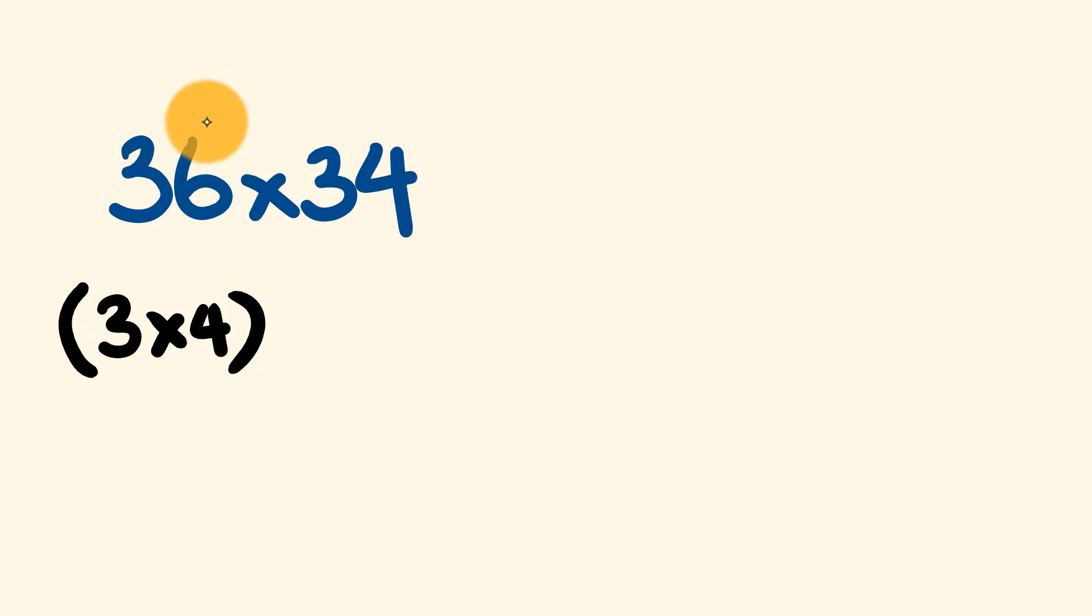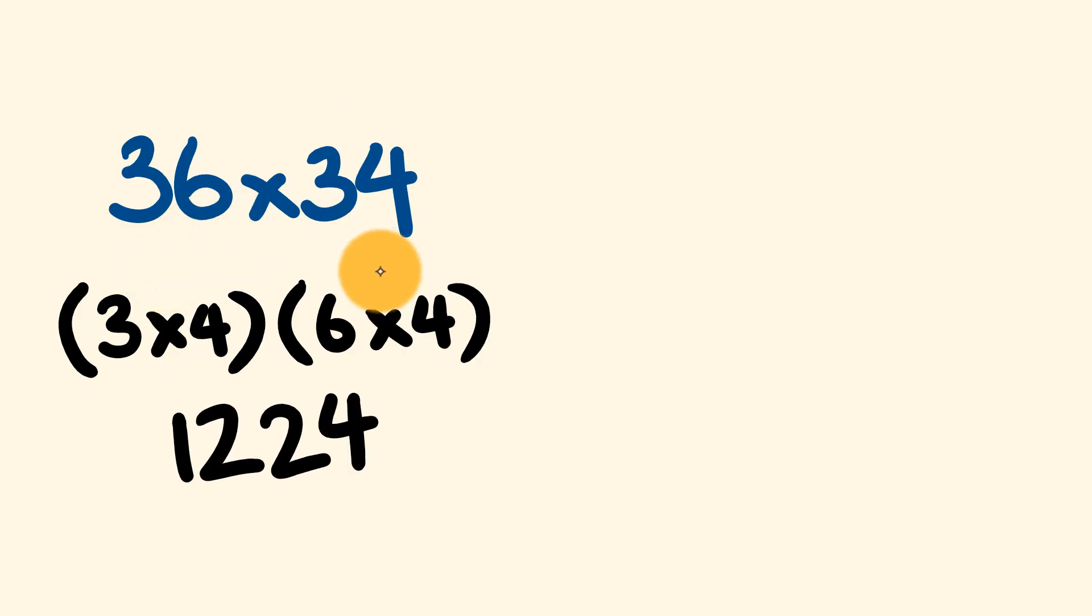So let's have a look, trick number one. Say we wanted to multiply 36 by 34. We look at the tens digit here, which are both in their threes. So what we're going to do to get our tens digit is multiply 3 by 1 more than 3, 3 times 4. And to get our units digit, we multiply the two units digits together. So we have 6 times 4 and this will give us our answer. 3 times 4 equals 12 and 6 times 4 is 24. Our answer is 1224.